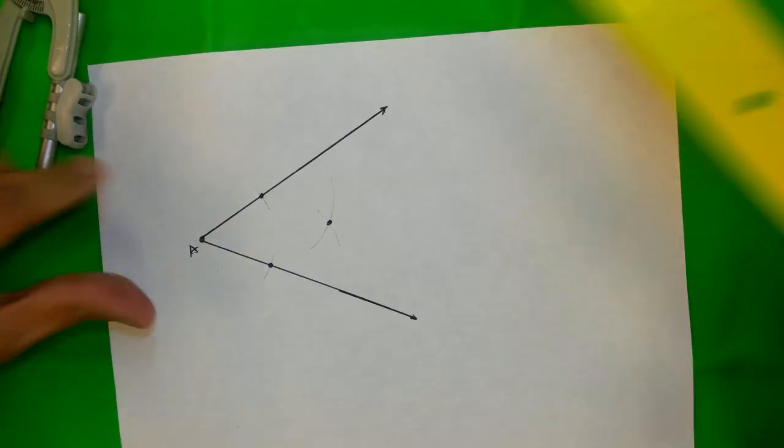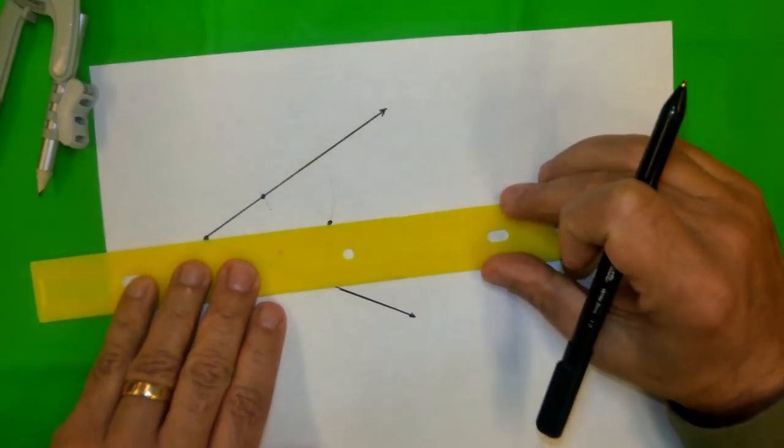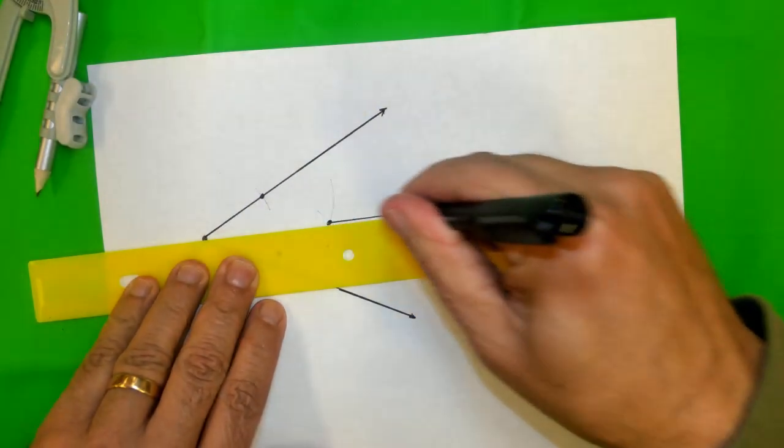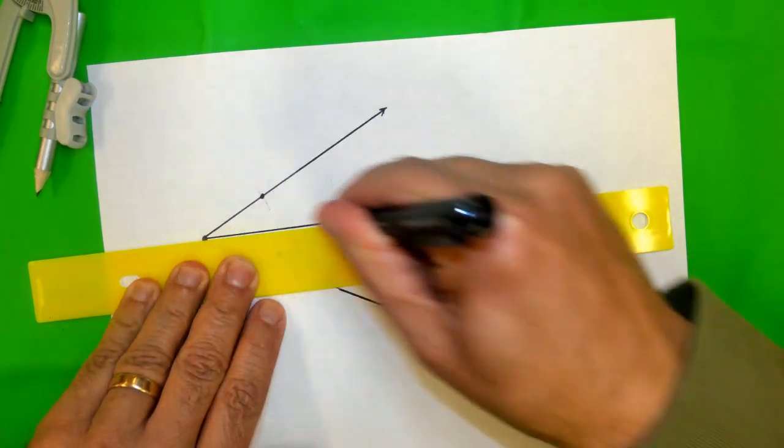And you notice these two arcs intersect in this point here. Now I'm going to take the straight edge and I'm done with this construction. This is what we call an angle bisector.